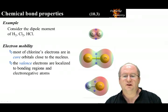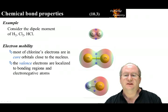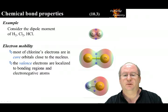We have already learned about core and valence electrons. The core electrons are localized to each atom. The valence electrons are involved in bonding and contribute to the dipole moment.